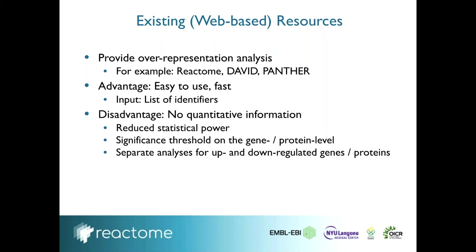Additionally, in classical tools you have to run separate analyses for up- and down-regulated genes. It might even be the case that the same pathway is hit in both. In quantitative analysis, we take this into consideration and can tell you afterwards whether a pathway is up or down regulated.